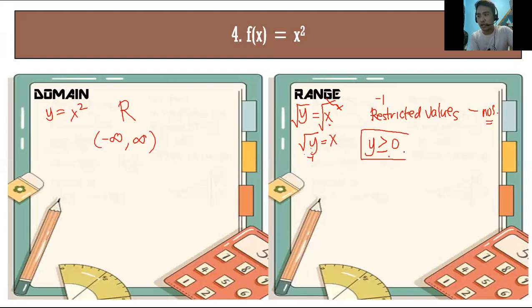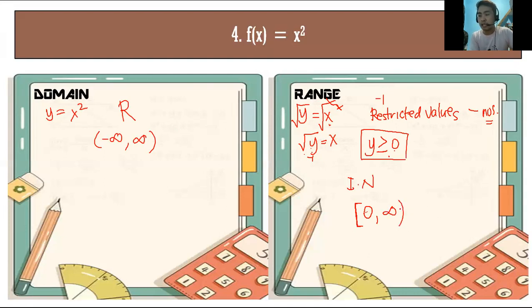In interval notation, the range of f(x) = x² is [0, +∞). We use an open bracket because 0 is included. Infinity always gets a parenthesis.